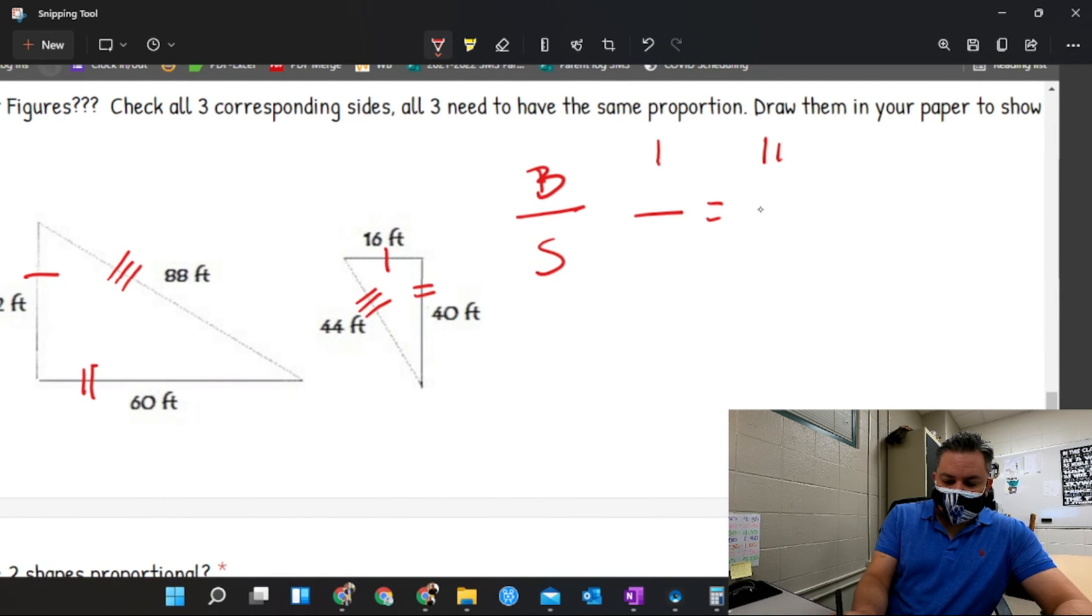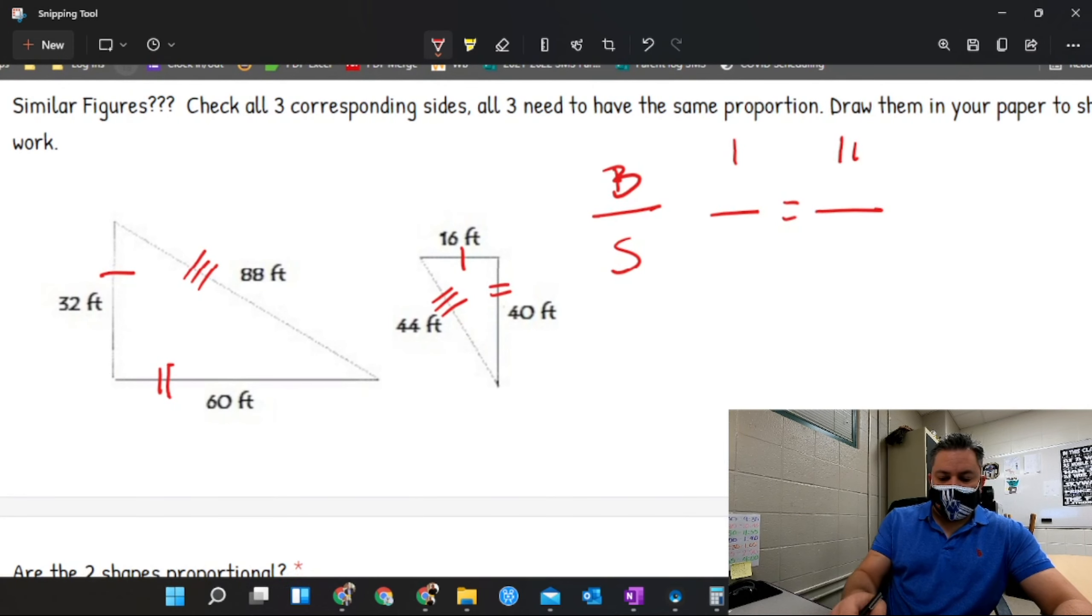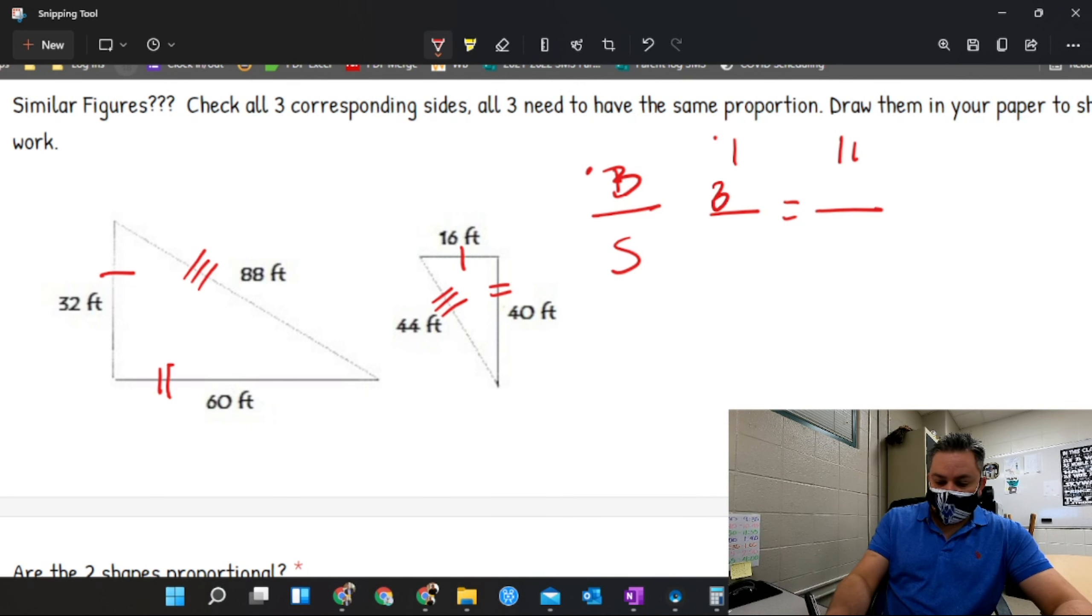If I look at the big triangle with the number one, what number do I have in there? Big one, what number do I have in there? 32. That's what I'm gonna put in right there. Now I'm gonna look for B2. What number do I have in there? B2? 60. Very good.